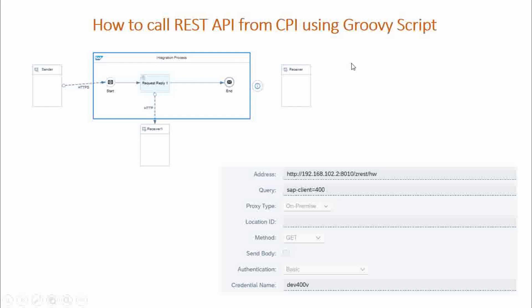When you have a REST API which is inside an SAP system on-premises, it is always recommended to go via the cloud connector, because that is a secured way of consuming the API. But today I am going to take an experiment — which is not recommended, but just for our understanding purpose — consuming the same REST API inside my SAP on-premises system using a Groovy script.